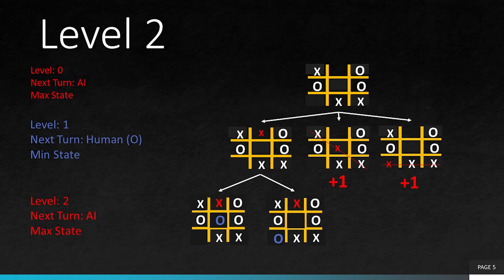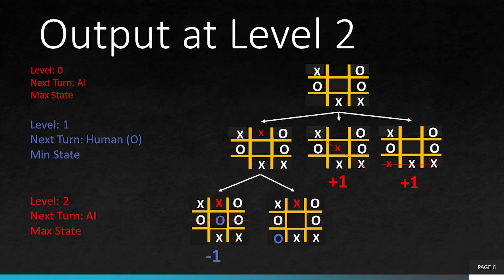Hence, level 2 has two children for these two possibilities for the human player as you can see now. We have a winner on the human side, and if this is going to be the winner, the score assigned to this will be minus 1 as this is the terminal state which is in favor of the human player and not the AI.